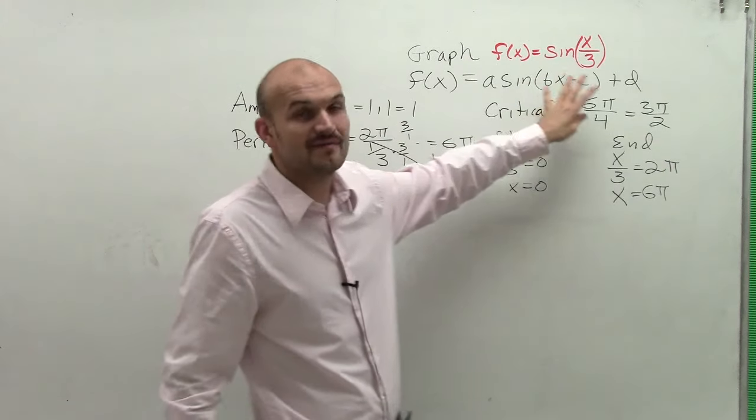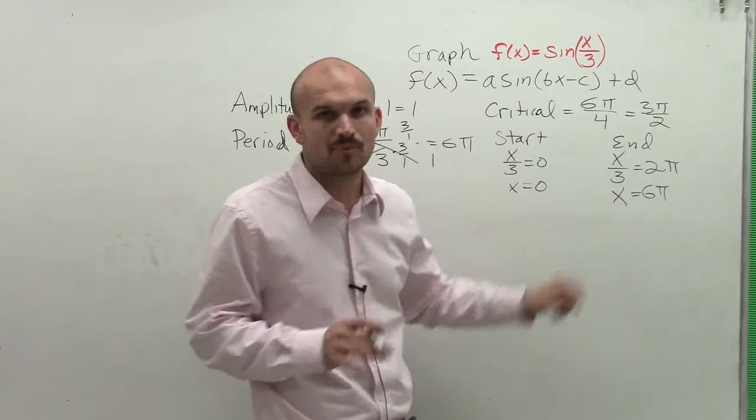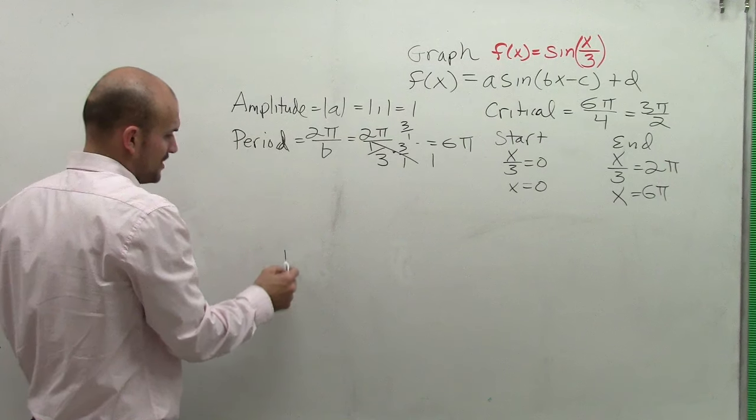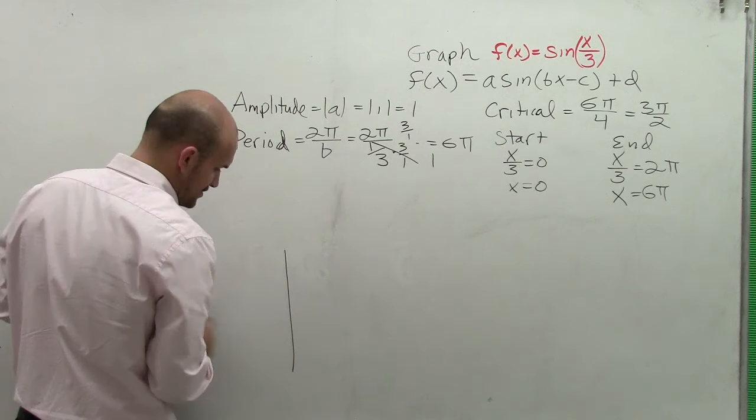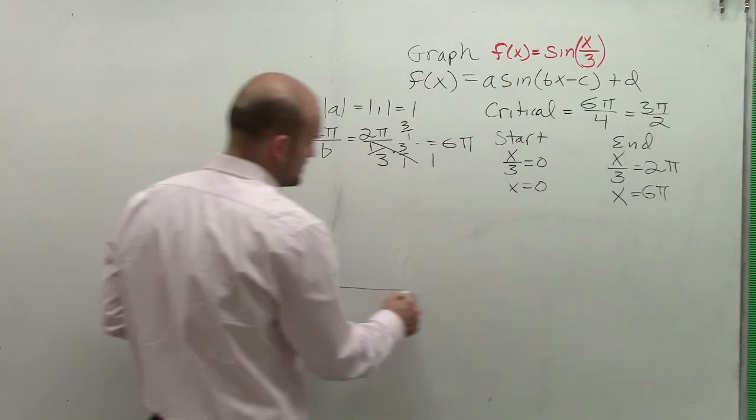However, since we don't have a phase shift or a vertical translation, it's not as important right now. We can actually get away with it just by graphing the amplitude and the period. So I don't know why I drew that vertical line there. So let's go ahead and graph and see what's going to happen.